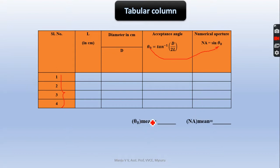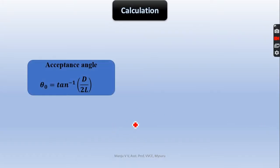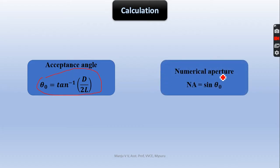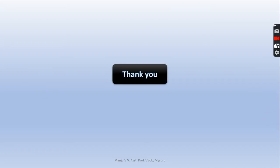Finally, take the average of the angle of acceptance as well as numerical aperture. This is one of the tabular columns. This is the formula to calculate the acceptance angle, and this is the formula to calculate numerical aperture. Once you take the average, mention both the angle of acceptance and numerical aperture. Thank you.